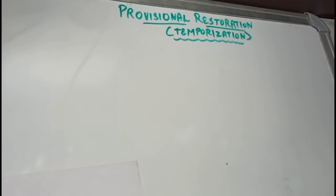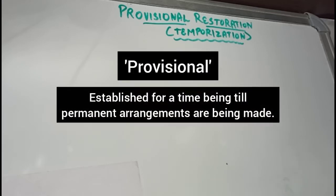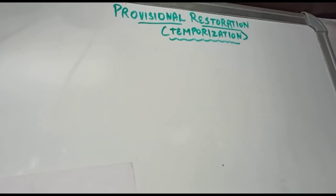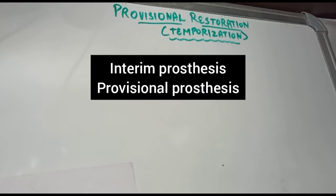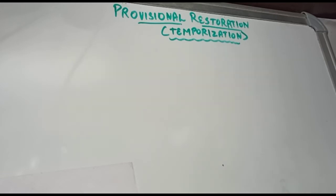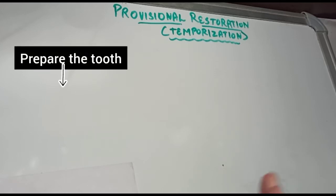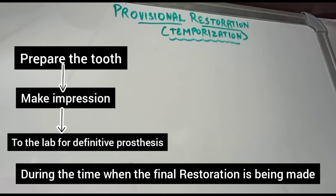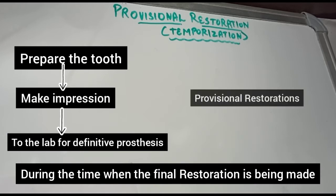Let's start with the term itself — provisional means it is established for a time being until permanent arrangements are made. It is also called temporization, interim process, or provisional process. When we have to give an FPD to any tooth or teeth, we prepare that tooth, make the impression, and send it to the lab for fabrication. While the cast restoration is being fabricated, the prepared tooth must be kept protected.